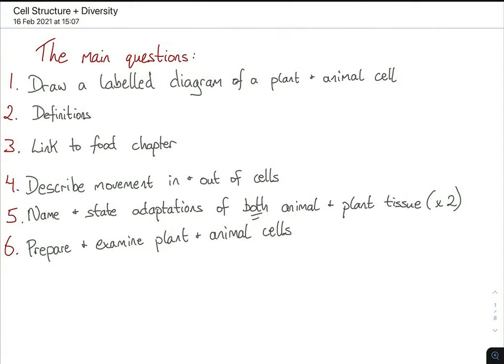Hello everybody and welcome to Bite Size Biology. Today we are looking at cell structure and also diversity amongst tissues. So the main questions that you could be asked here are to draw a labelled diagram of the plant and animal cell. Generally this is the first chapter that you do and there's a lot of repetition from the junior cycle, with a little bit more detail however.